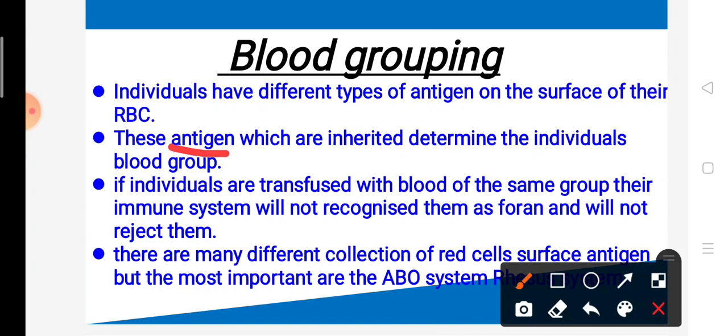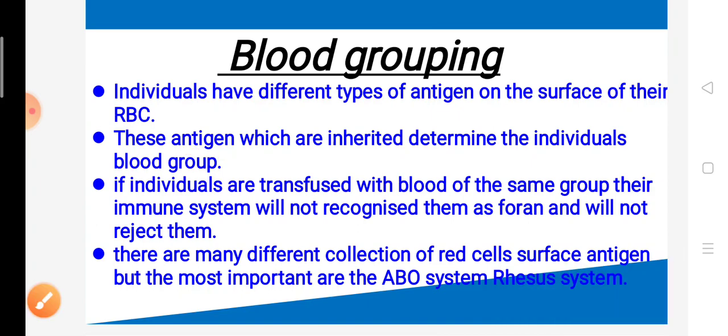If individuals are transfused with blood of the same group, their immune system will not reject it. If individuals need blood transfer and the blood group does not match — if the DNA is not the same — then the person will not accept the transfused blood.